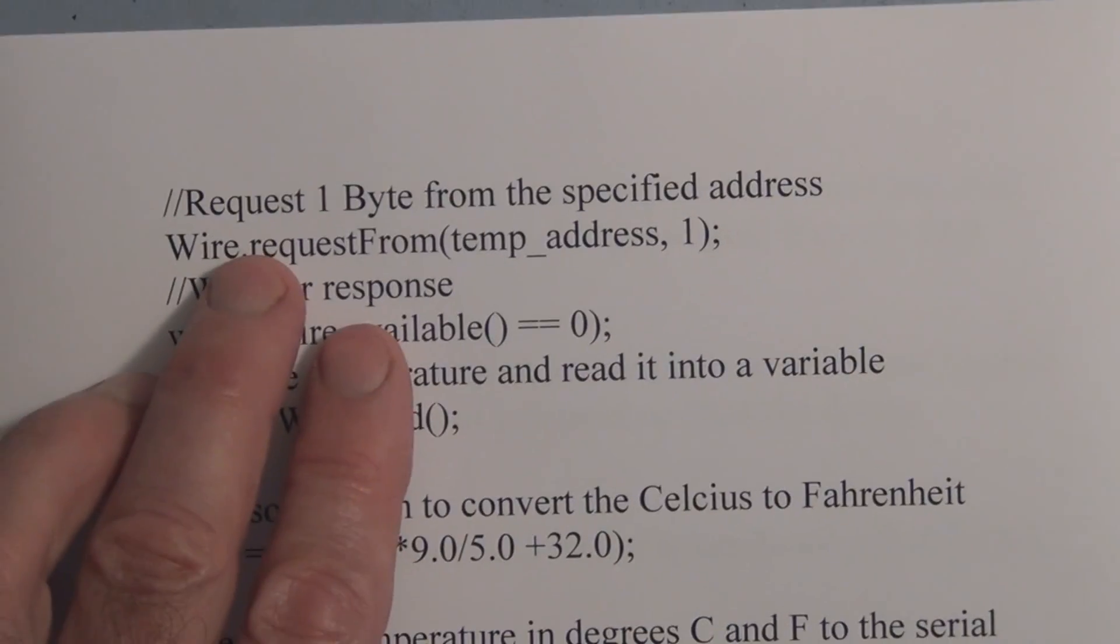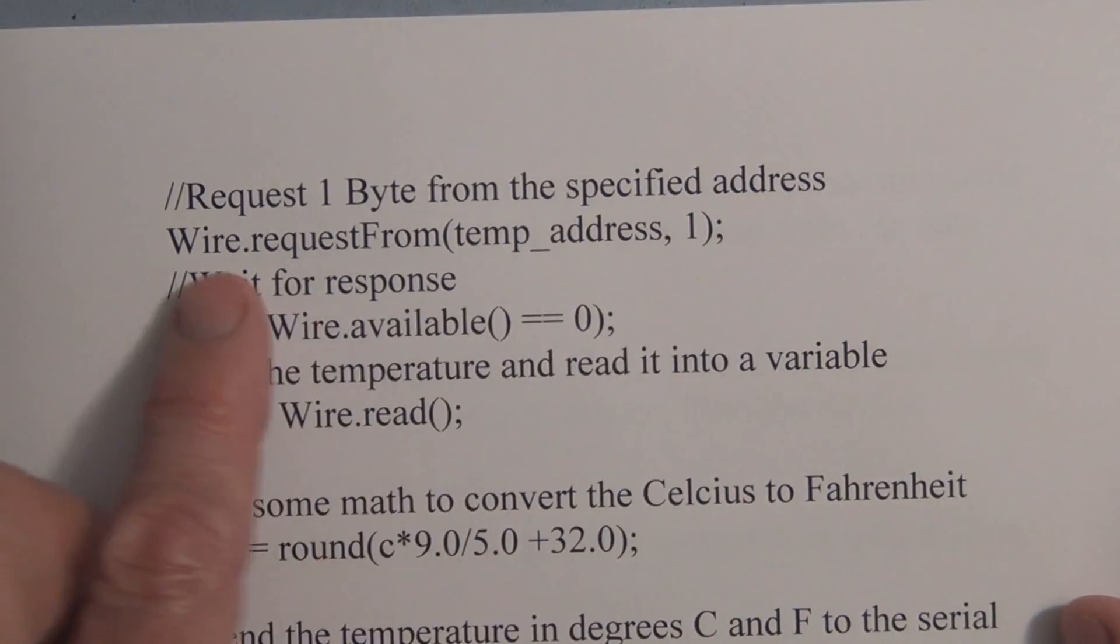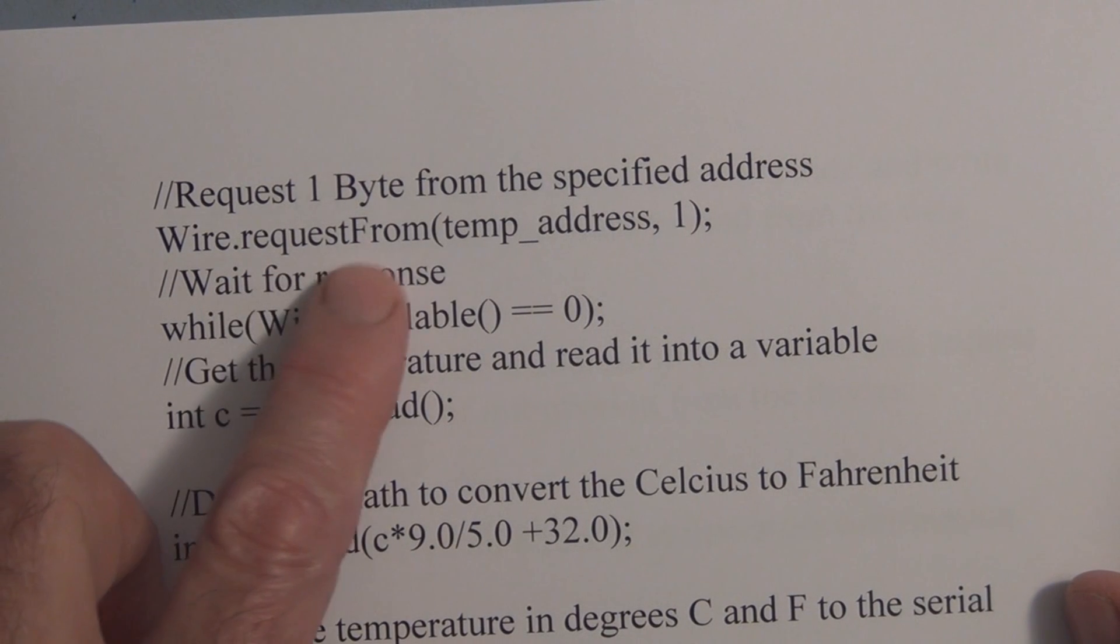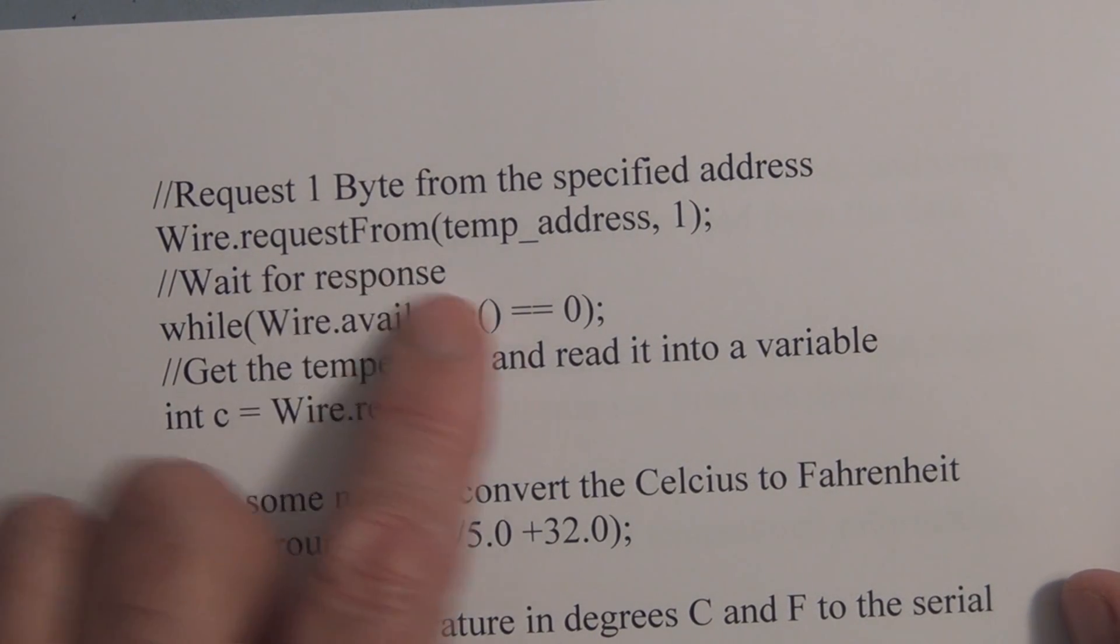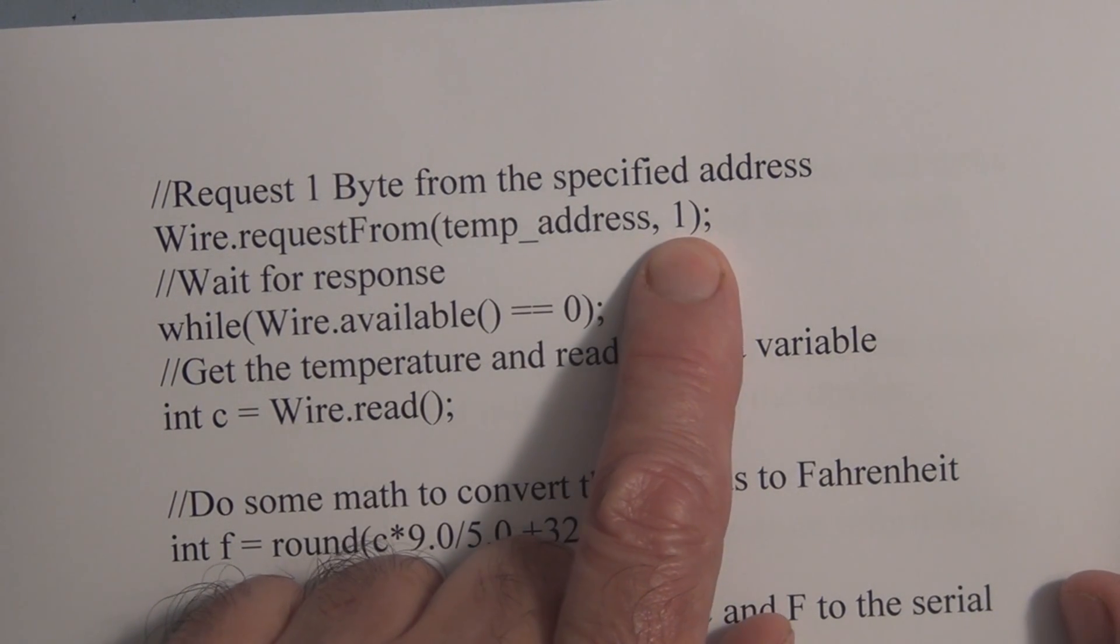So here we request one byte of information from the specified address. So here's a wire dot request from function. And there's two arguments: the address of the slave and we're requesting one byte of information.